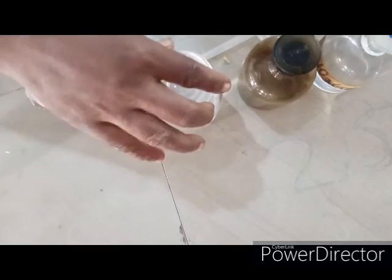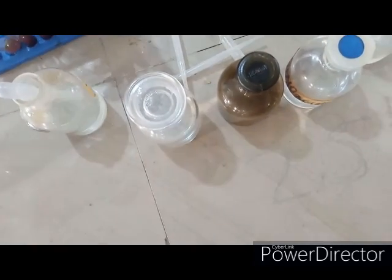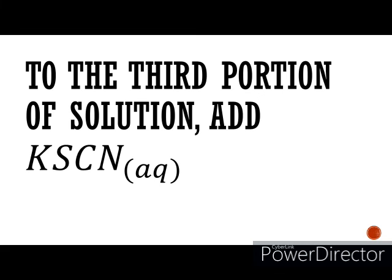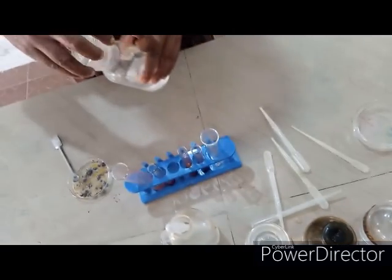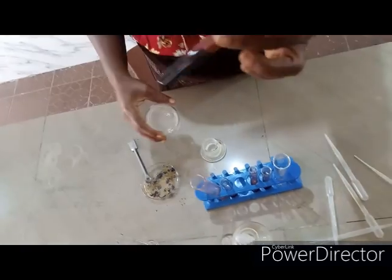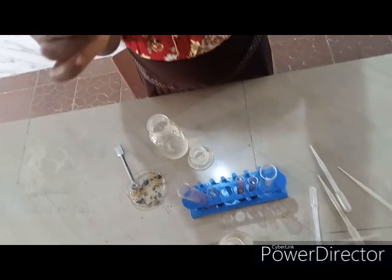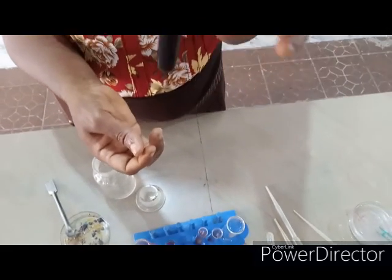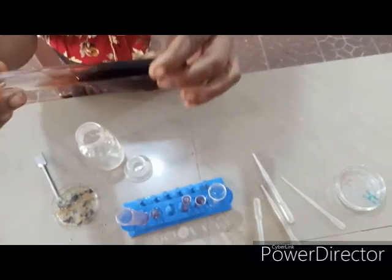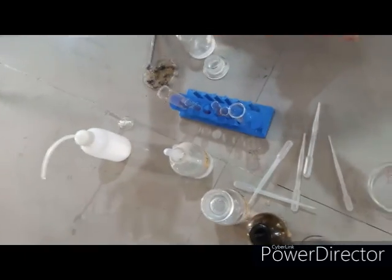The cation present in this salt is iron 3 plus. To the third portion of the solution, there are other confirmatory tests for iron 3 ion — we are adding potassium thiocyanate. What do you observe? The solution turned blood red. That is our observation and iron 3 plus is confirmed. This is another confirmatory test for iron 3 plus. When you tilt your test tube, you see that there is a blood red coloration.